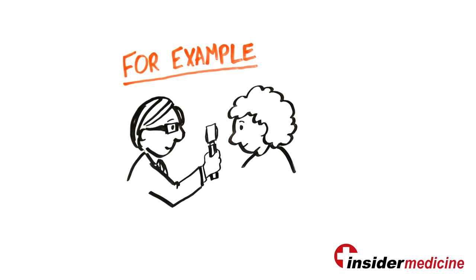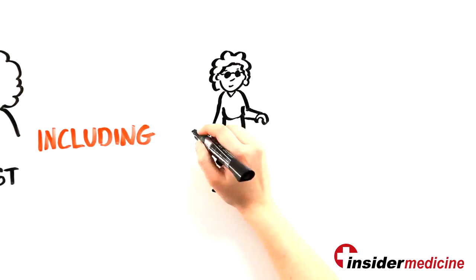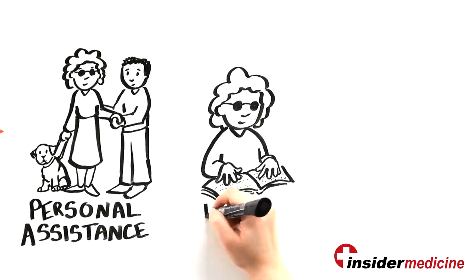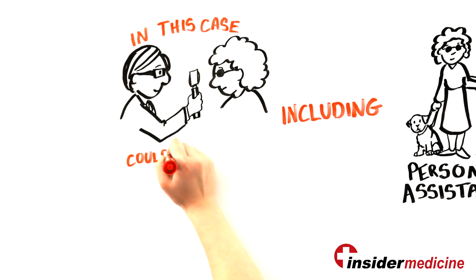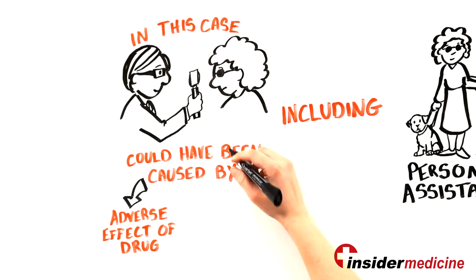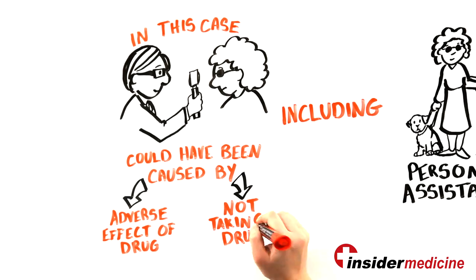For example, in eye care, we also have to consider the cost to the health care system if a patient went blind, including personal assistance, patient education, and continuing medical care. In this case, the blindness could have been caused by an adverse effect from the drug or through not taking the drug at all.